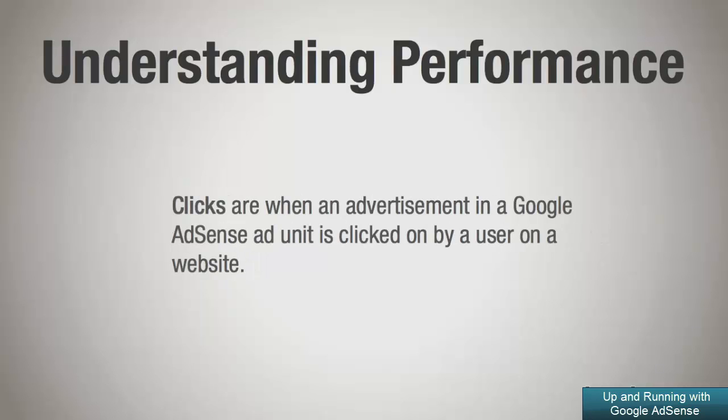The second term is clicks, which is pretty straightforward. When a user clicks on an advertisement in a Google AdSense ad unit, a click is recorded and we'll see that in the performance reports.